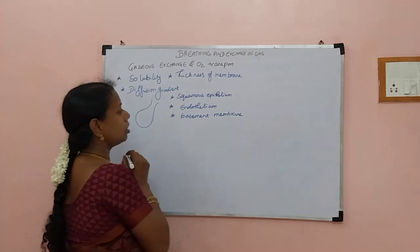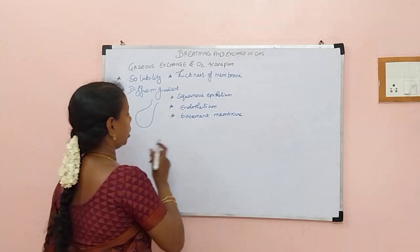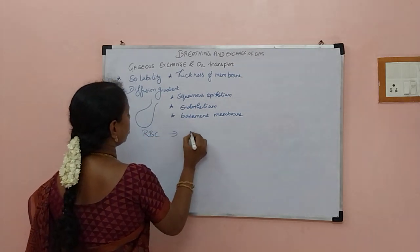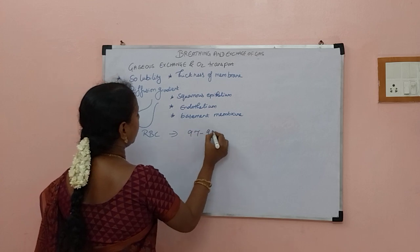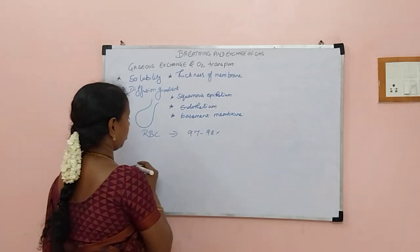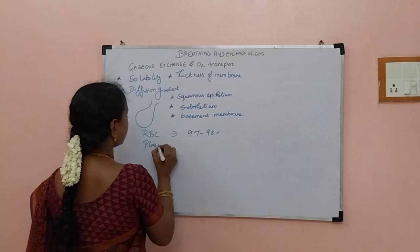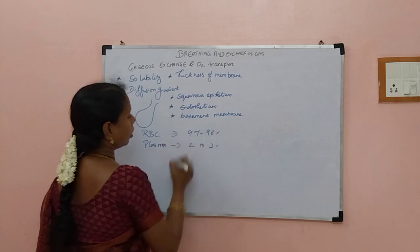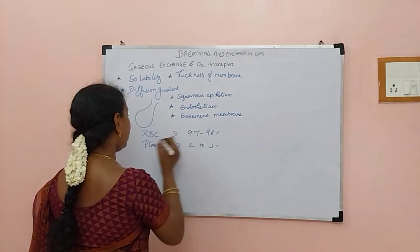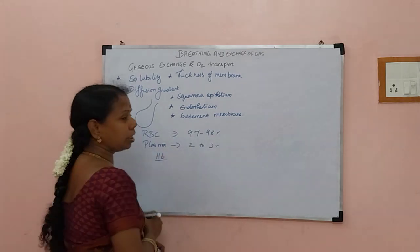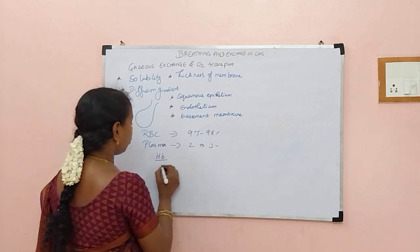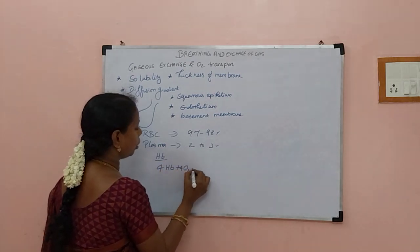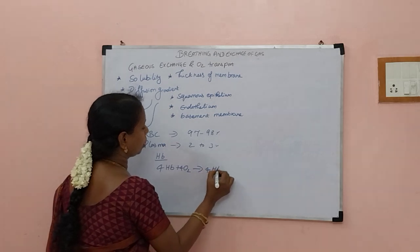Now, how is oxygen being transported? Oxygen in RBCs accounts for 97 to 98 percent of transport, while plasma transports the remaining 2 to 3 percent. In RBCs, hemoglobin is present to carry oxygen — one hemoglobin molecule combined with 4 oxygen molecules for transport.